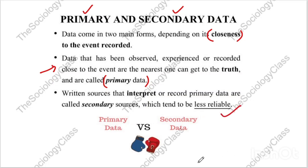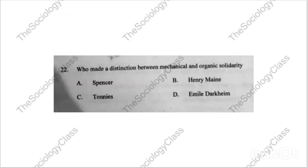Question number twenty-two: 'Who made a distinction between mechanical and organic solidarity?' Options: Spencer, Henry Maine, Tonnies, Emile Durkheim. This is a very easy question. The correct answer is D — Emile Durkheim.